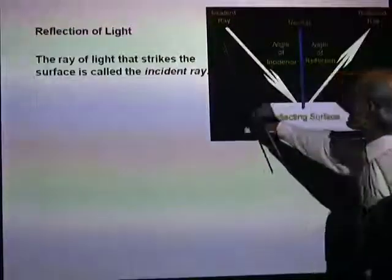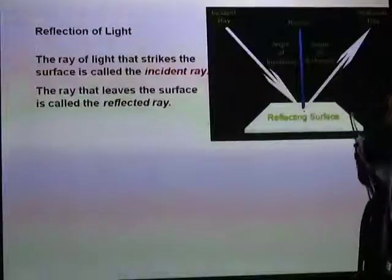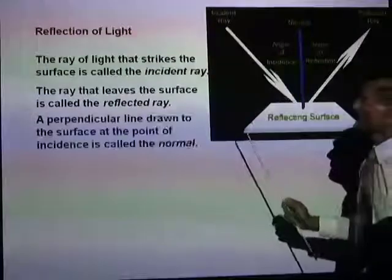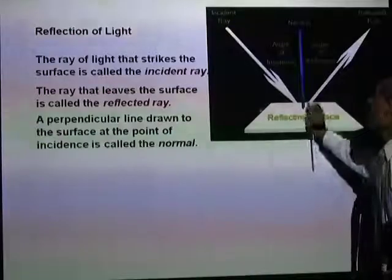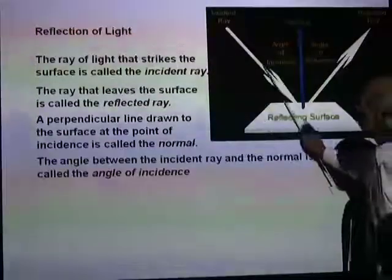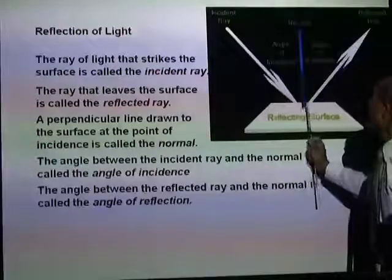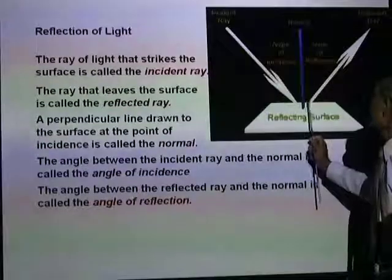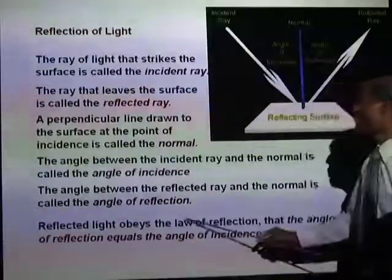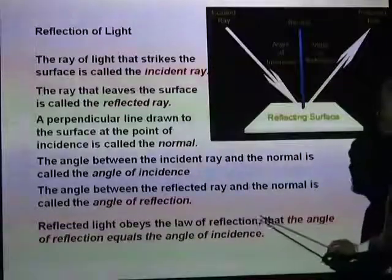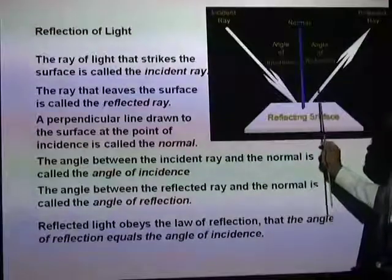The ray of light that strikes the reflecting surface is the incident ray, and the ray that leaves that surface is the reflected ray. If you draw a perpendicular to the surface at the point of incidence, we call that the normal. The angle between the incident ray and the normal is the angle of incidence, and the angle between the normal and the reflected ray is the angle of reflection. Reflected light obeys the laws of reflection, and the most important law is that the angle of incidence is equal to the angle of reflection.